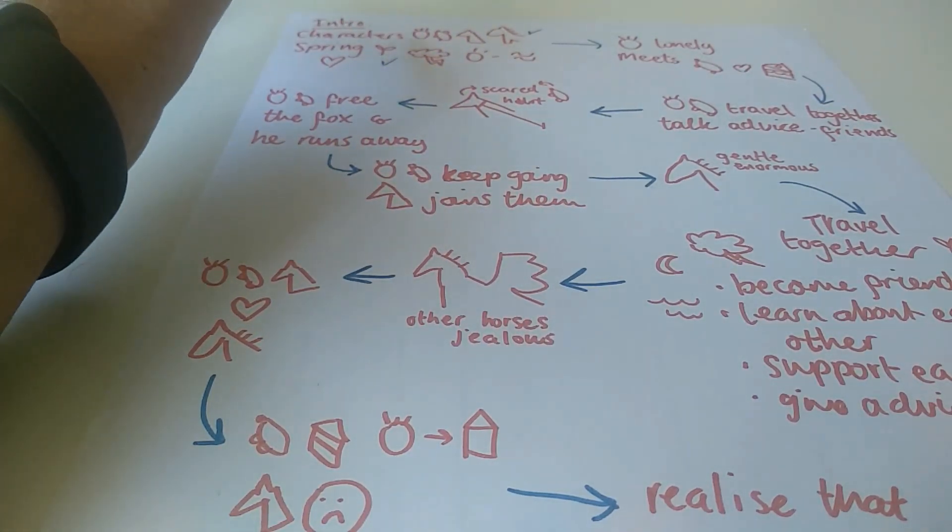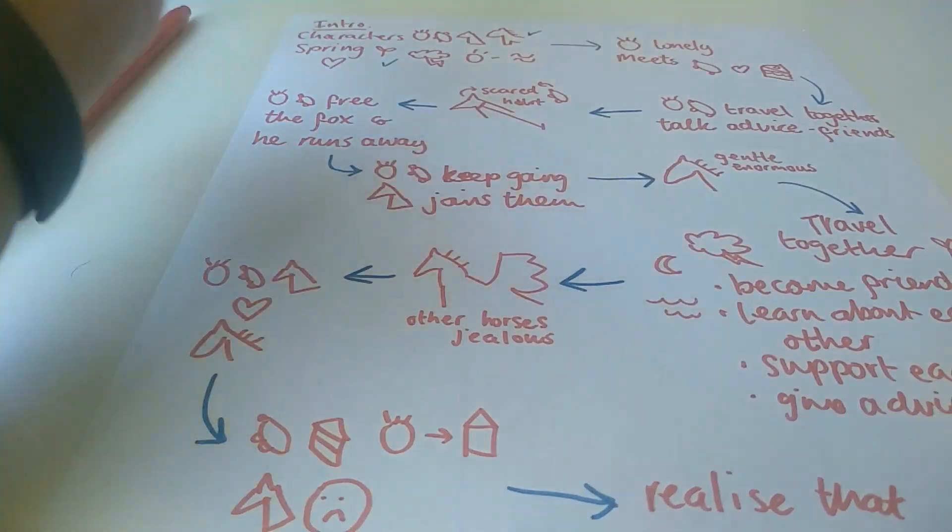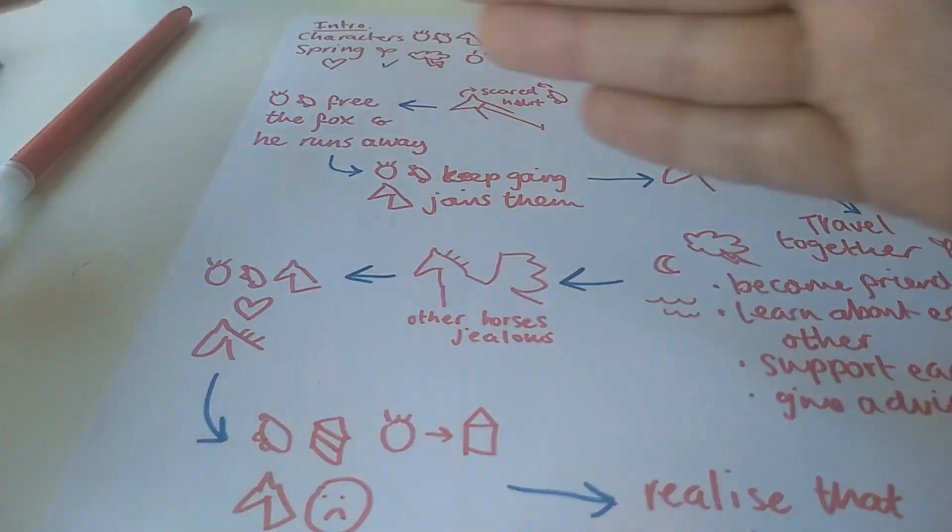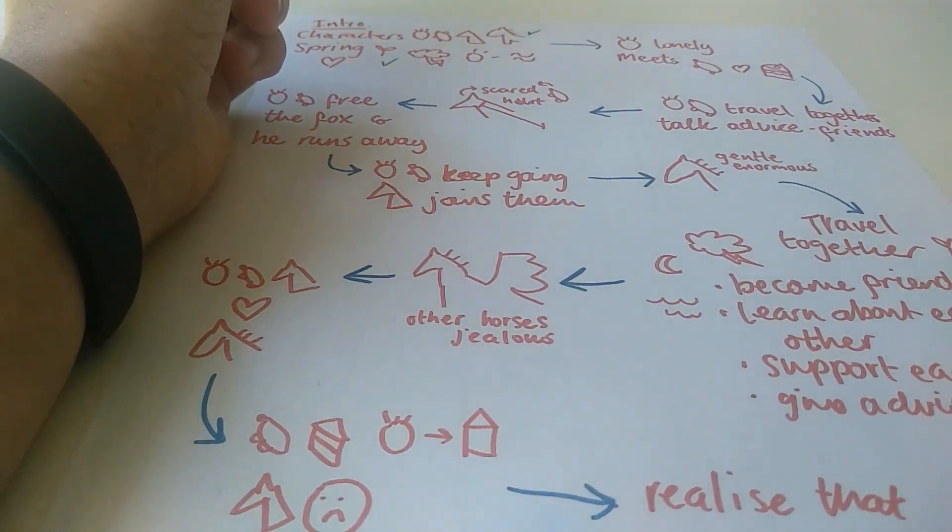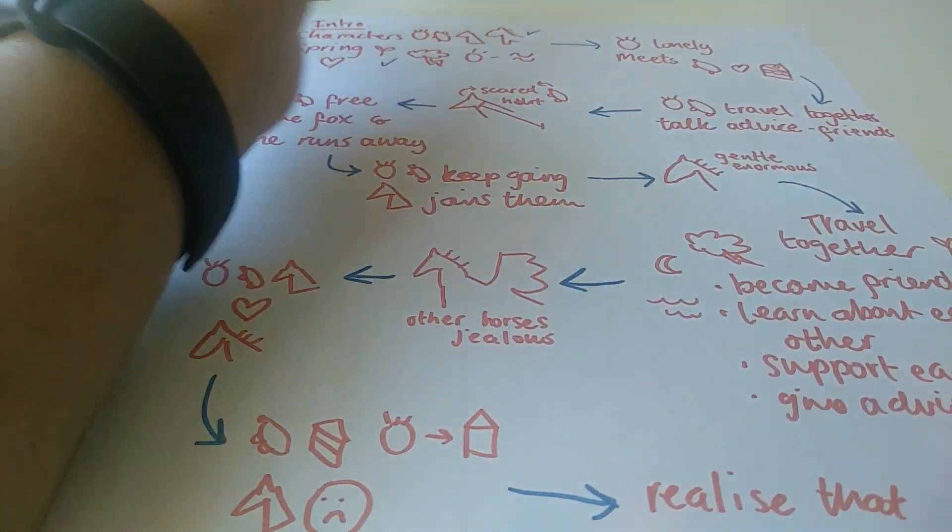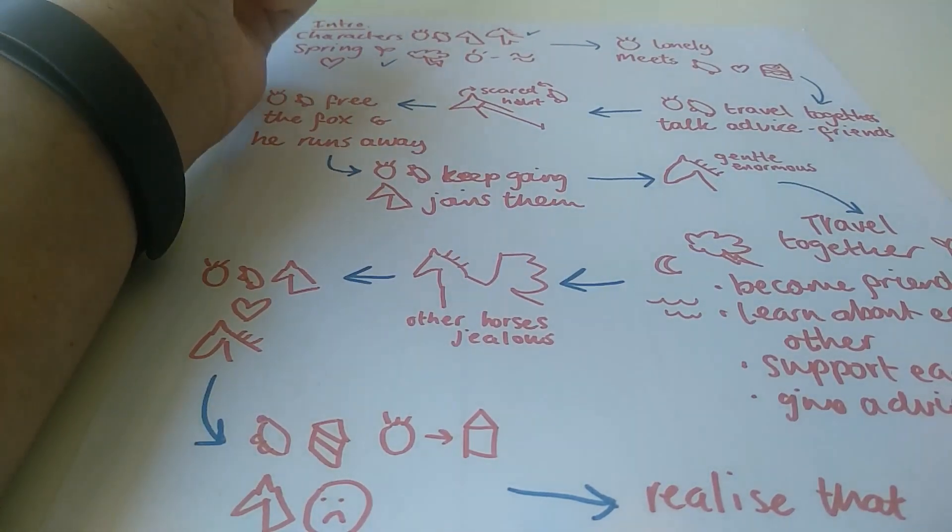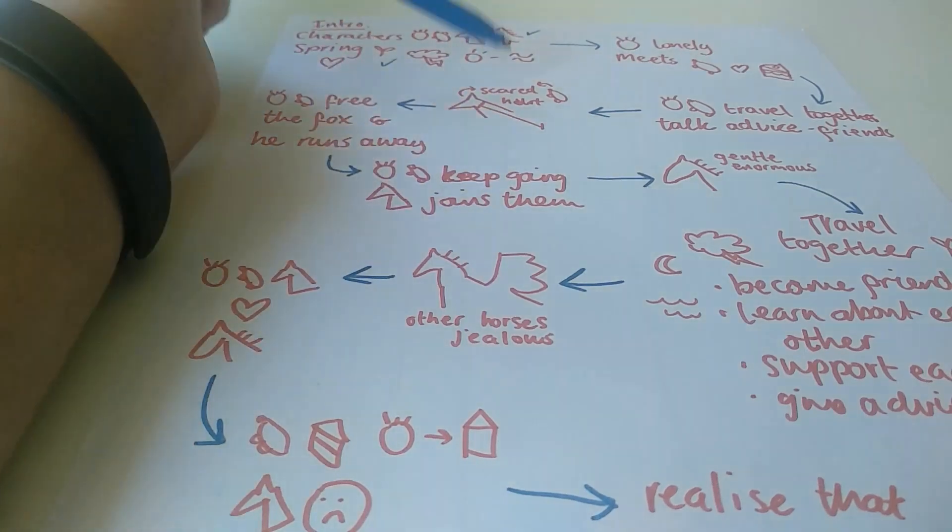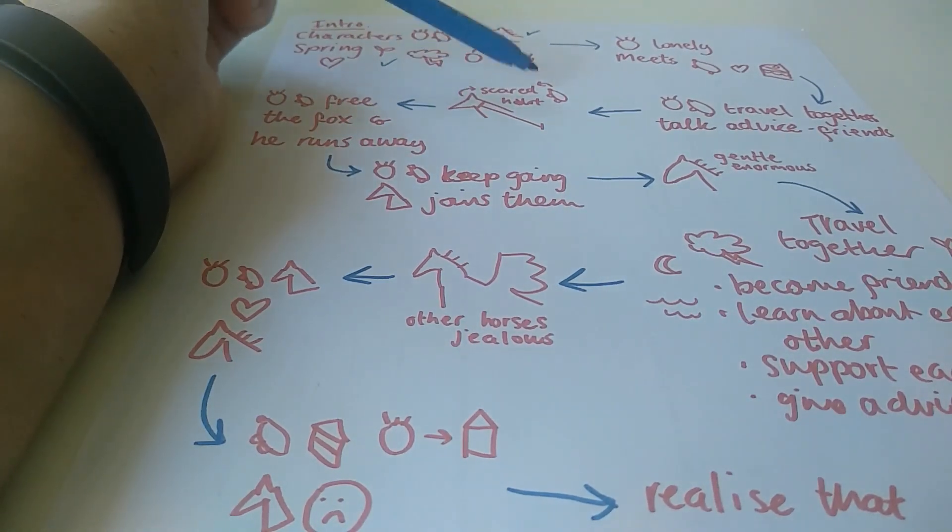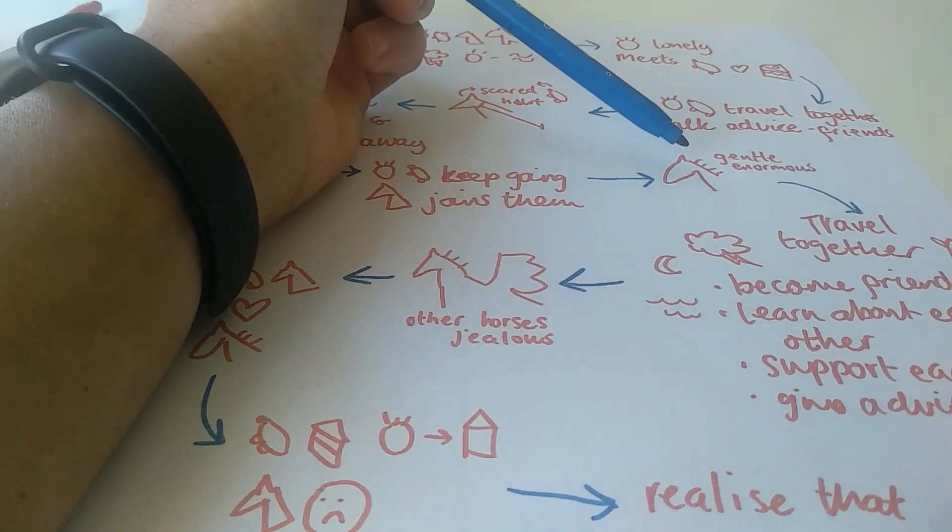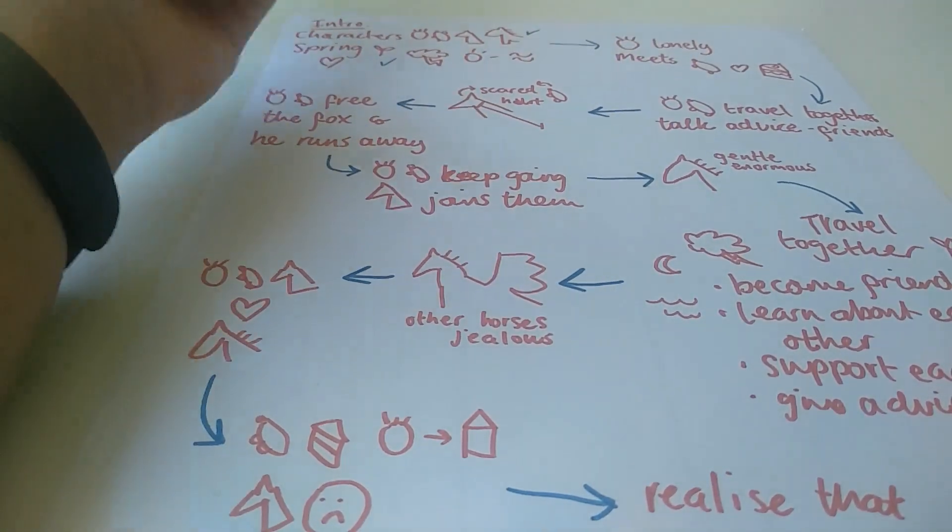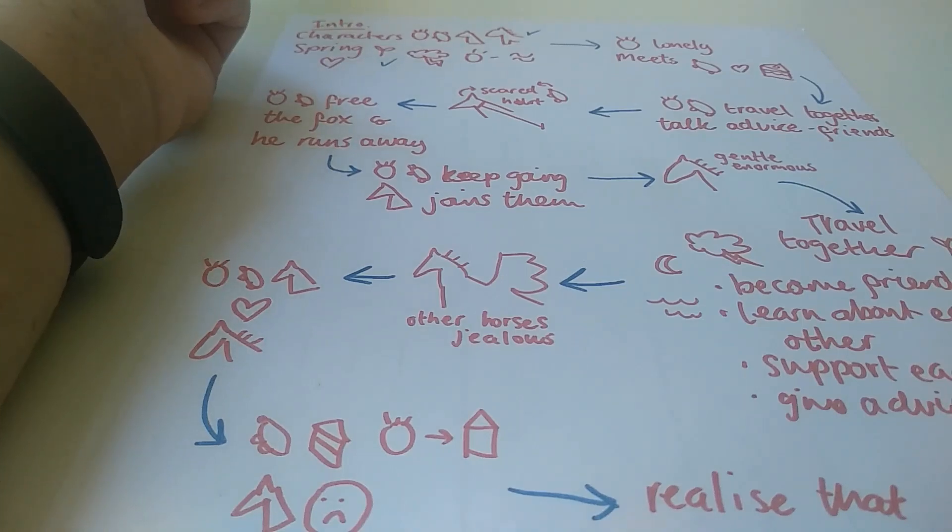So this is one idea, the introduction. Then the next idea is when the boy meets the mole and they travel together. And then they meet the fox. So they're all different things that happen. So that could be how I choose to paragraph it. By every time there's an arrow, start a new line. And I've written down a couple of key words every so often. Like the boy is lonely. The fox and the mole are scared. The horse is gentle and enormous. But these can just be starting points. I can think of a lot more as I'm going through each bit at a time.